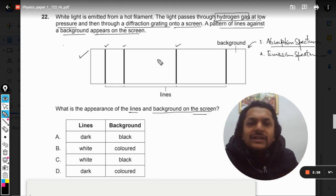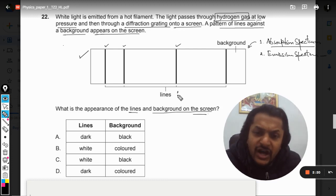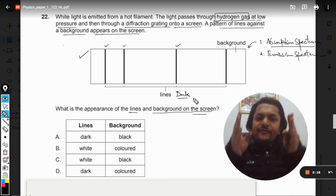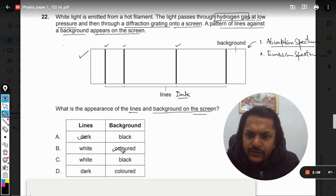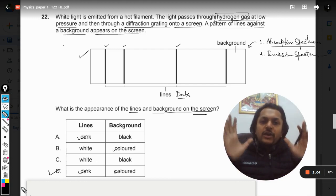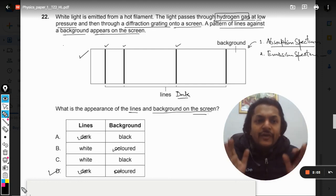The wavelengths or frequencies which have been absorbed by the hydrogen are not available here, but all other waves are available. It only means that the background will be colored but we would be having dark or black colored fine lines on the spectrum. So it will be dark lines and the background will be colored. So our answer will be D because this is a clear-cut case of absorption spectrum.